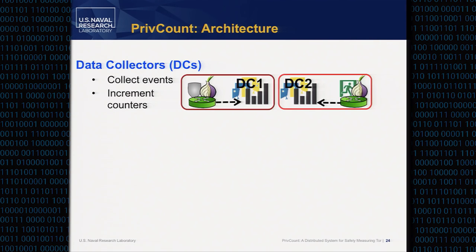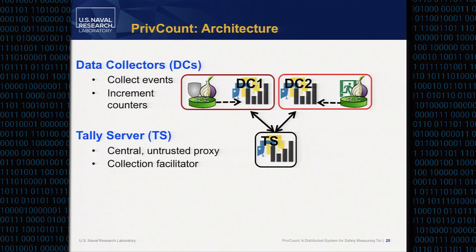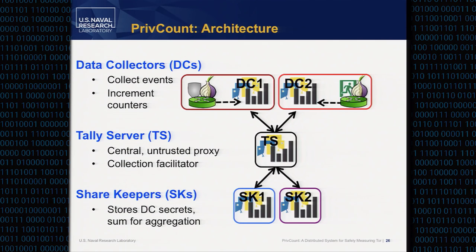There are three different types of PrivCount nodes. First, data collectors, which run on the same machine as a Tor relay, connect to the Tor process, consume events from Tor, and use that to increment various counters — this counting process is implemented inside the data collector, which is a Python process. Second, tally servers, which are central and untrusted proxy nodes that facilitate communication between data collectors and share keepers. Third, share keepers, which store secrets from the data collectors during the measurement process, then send those secrets to the tally server for aggregation afterward.